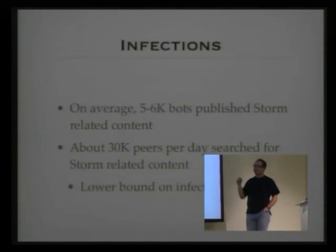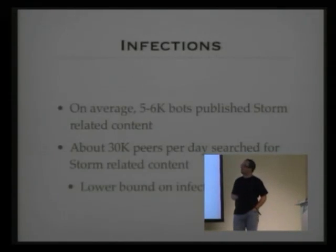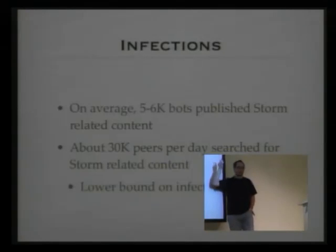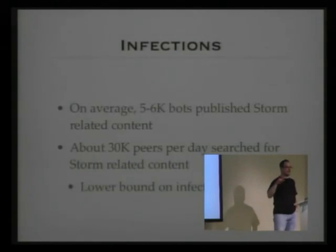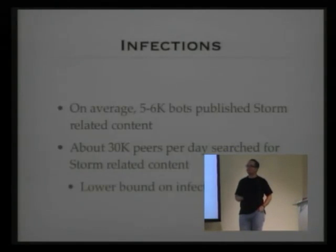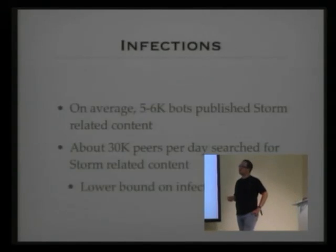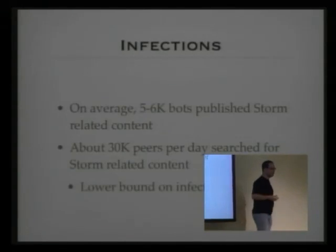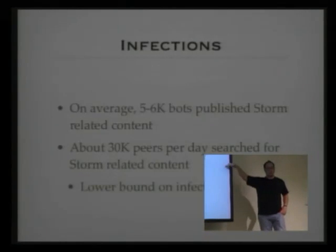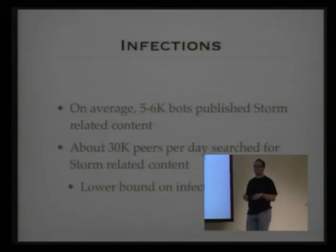On average with the help of the Sybil attack, we see between 5,000 and 6,000 bots publishing Storm-related content. These are part of the control infrastructure — they publish hashes that other peers can search for, and they also function as DNS servers or web servers for downloading content. We see about 30,000 peers per day searching for that content, which is a lower bound — we don't see all searches, but at least 30,000 peers are infected and searching for Storm-related things each day.